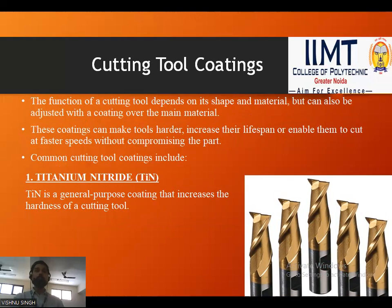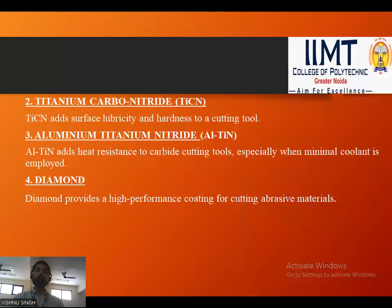Now let's see the various types of coatings which can be provided on a cutting tool to improve its performance. The function of a cutting tool depends on its shape and material, but can also be adjusted with a coating over the main material. These coatings can make tools harder, increase their lifespan, or enable them to cut at faster speeds. Common coatings include titanium nitride (TiN), a general purpose coating that increases hardness, and titanium carbon nitride (TiCN), which adds surface lubricity and hardness.